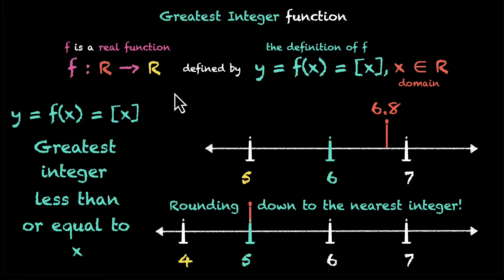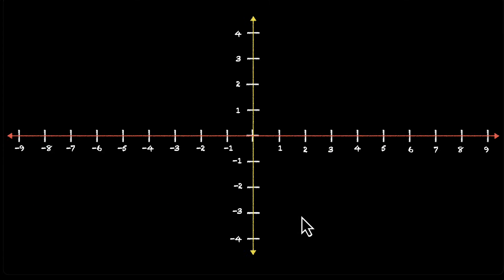Now that we have the definition clear and we have a few examples, let's try plotting the graph. If you want to give this a shot yourself, pause the video and sketch it out. Let's do this together. This is our x-axis, this is our y-axis and we want y = [x]. What values should we begin with? I'd say let's start with integers because when we put in integers, we are safe. Whatever we put in, we get the same output.